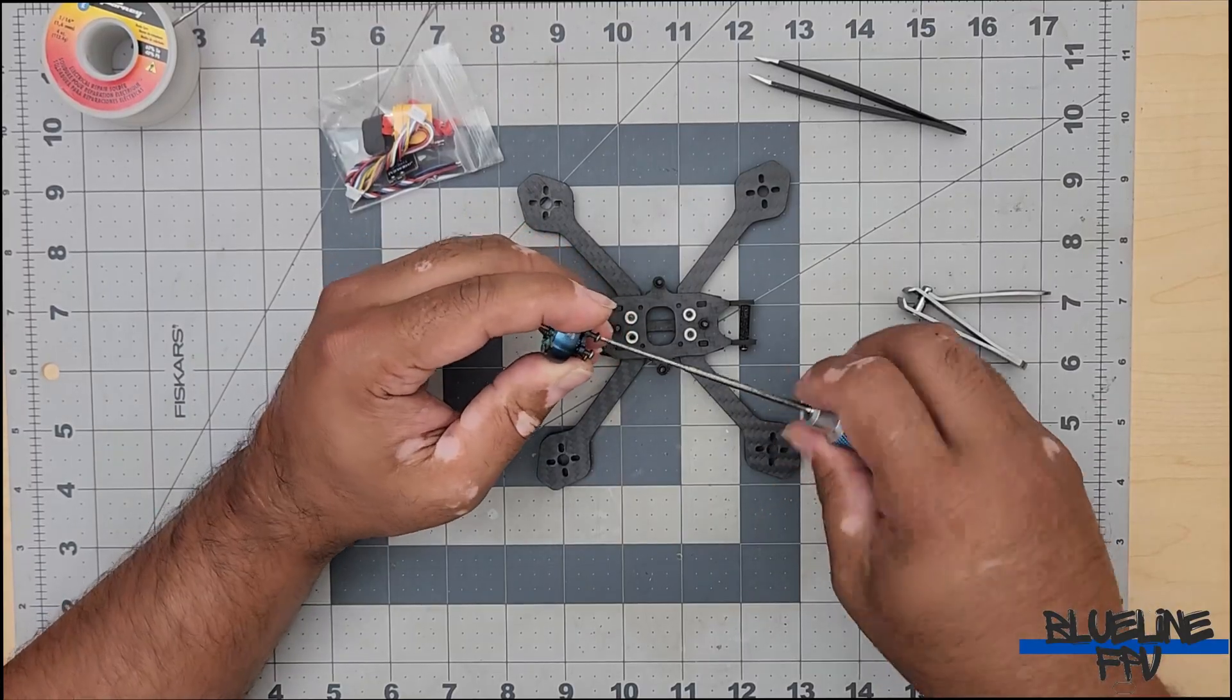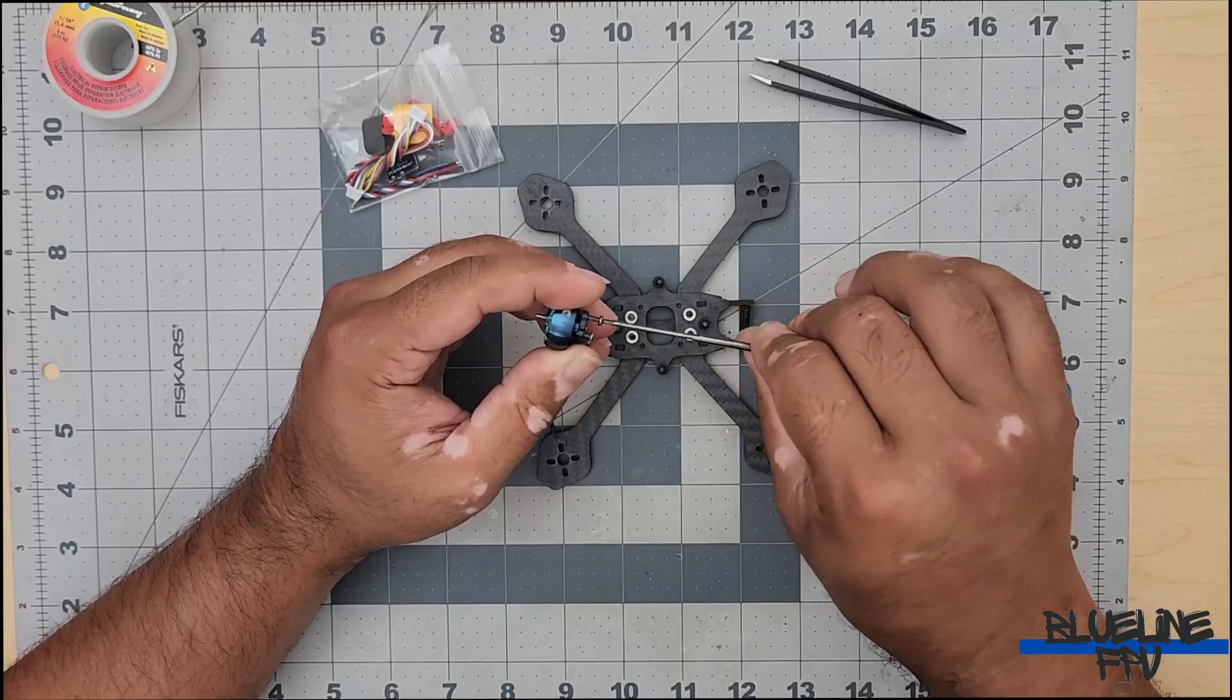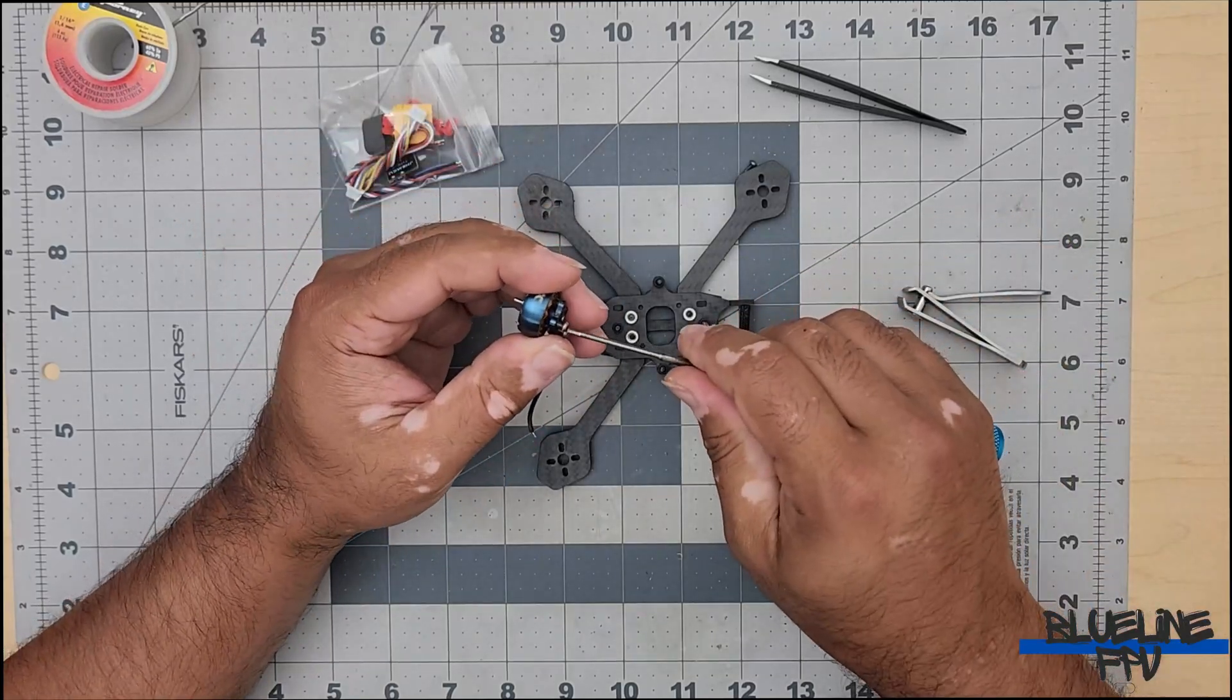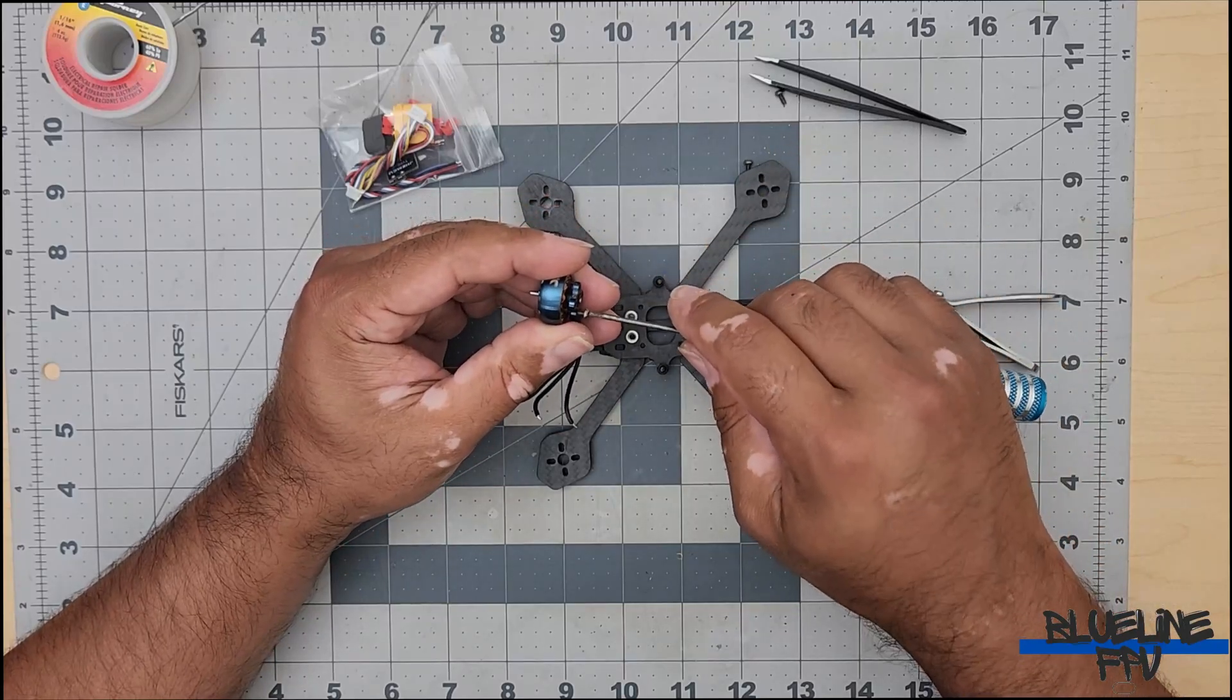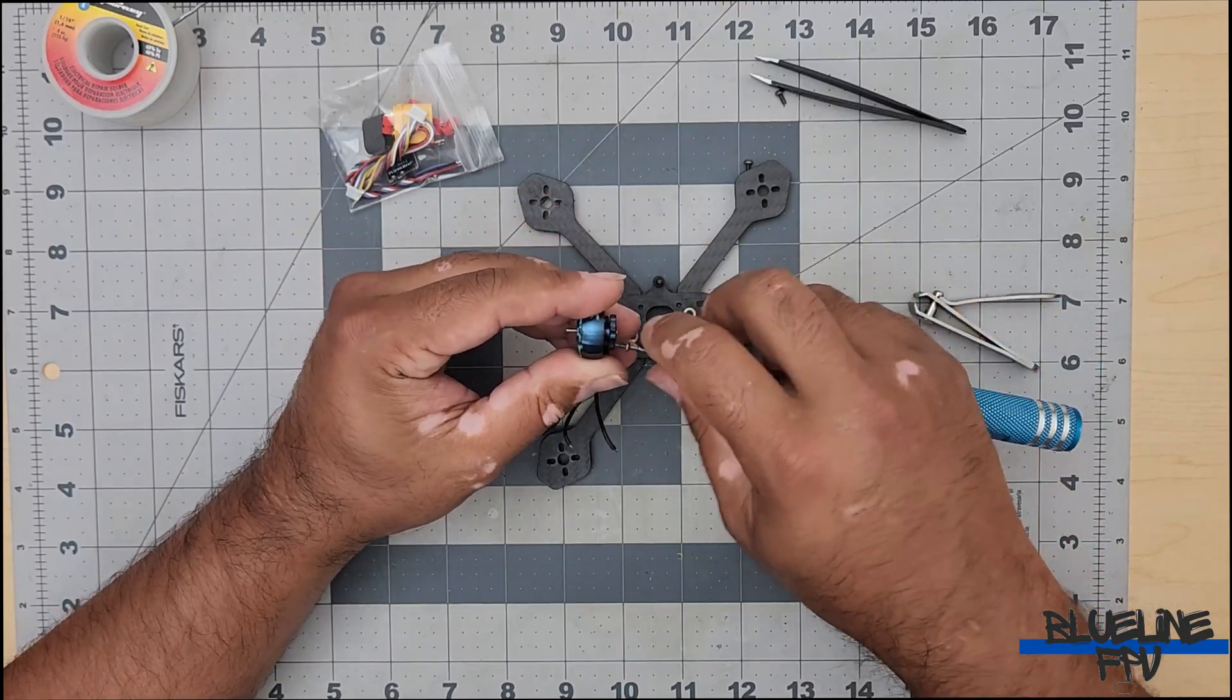All right, so here we have our frame and our motors. So we're going to start to mount the motors to the frame, and there's, of course, four in total.